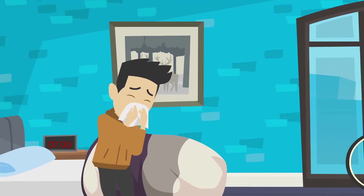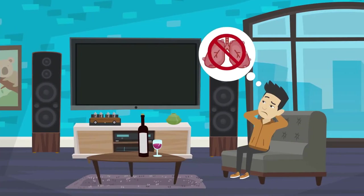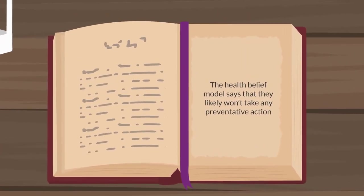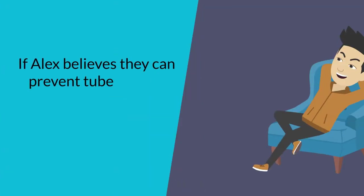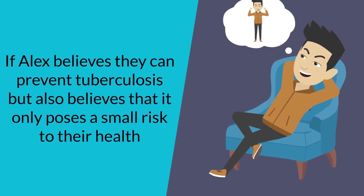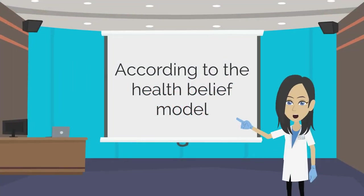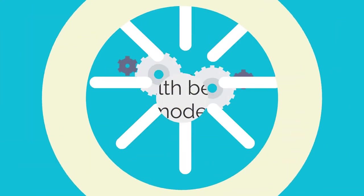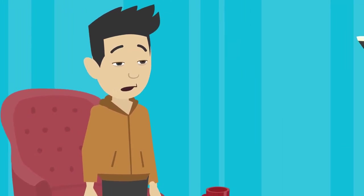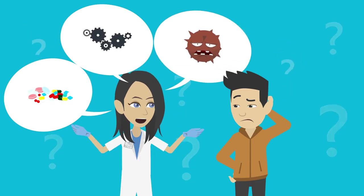For example, if Alex believes that tuberculosis poses a severe risk to their health, but also believes that there is nothing they can do about it, the Health Belief Model says they likely won't take any preventative action. Or, if Alex believes they can prevent tuberculosis, but also believes that it only poses a small risk to their health, they are again unlikely to take any preventative action. According to the Health Belief Model, if we want to improve the chance that Alex will take preventative action against tuberculosis, we need to convince Alex that tuberculosis both poses a risk and can be prevented.